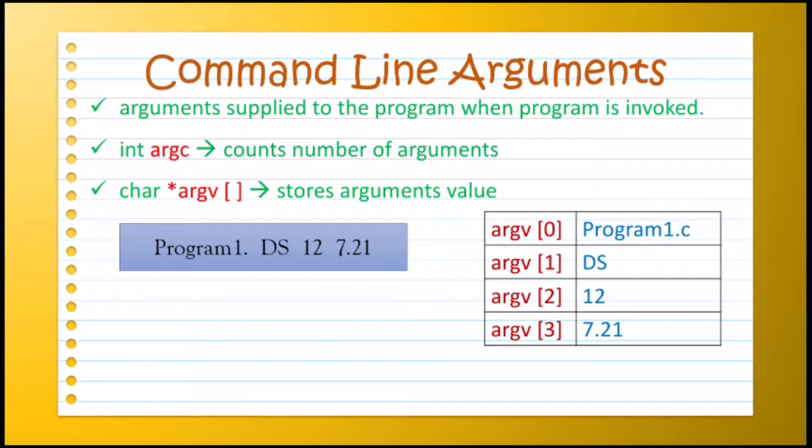Remember that all these values are saved as strings because the data type of ARGV is char. So 12 is not an integer.